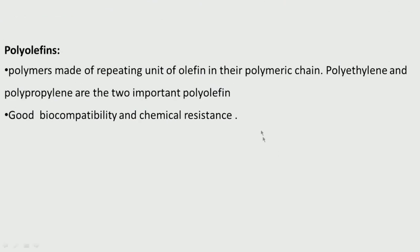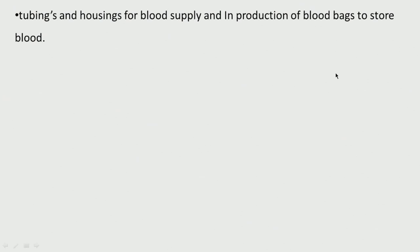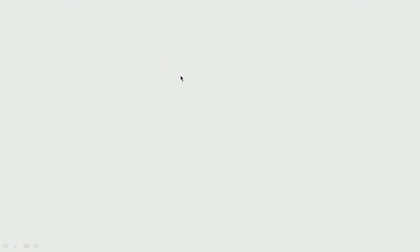Polyolefins have good biocompatibility and chemical resistance — especially polyethylene and polypropylene. They are used as tubings, housings for blood supply, and in the production of blood bags to store blood. Polypropylene is used for making heart valve structures.